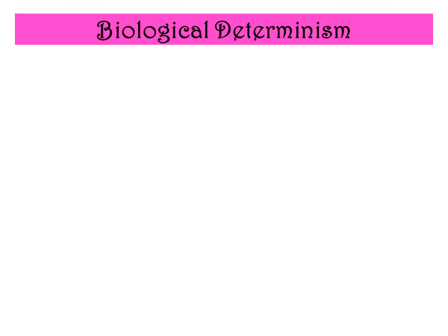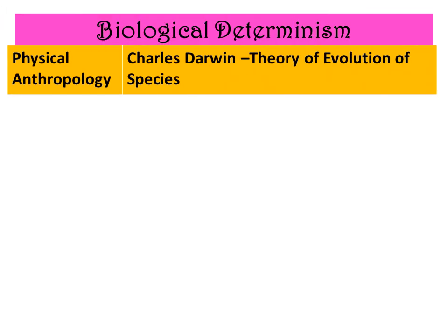Let's begin with biological determinism. The first noted personality is Charles Darwin, known for the Theory of Evolution of Species, wherein he conceptualized that men are a transition from ancient generation species — that man came from the family of apes. Although that theory was later discarded by succeeding theorists, his study focused on physical anthropology, which deals with the study of crime in relation to the physical constitution of an individual.